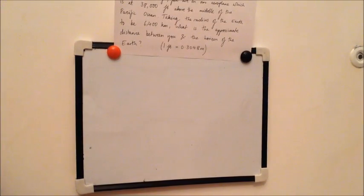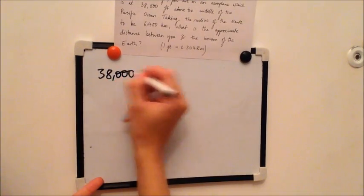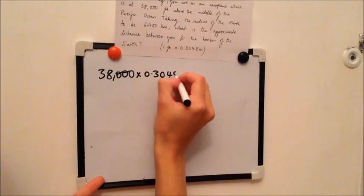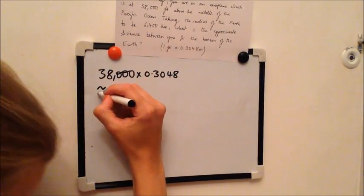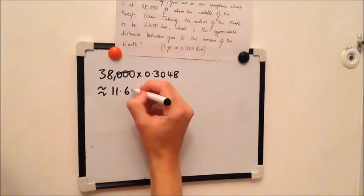So the first thing that I would do is convert the 38,000 feet into metres using the given conversion. So 38,000 feet times by 0.3048 metres is roughly, using a calculator, 11.6 kilometres.